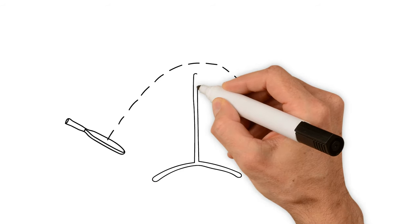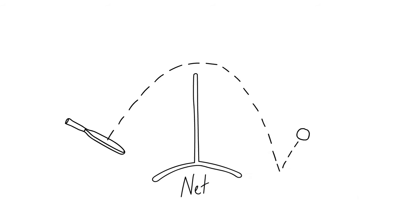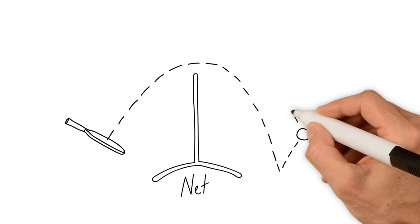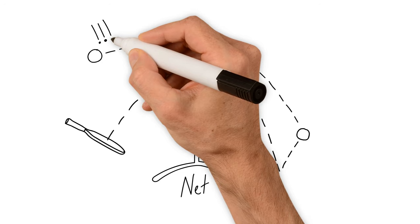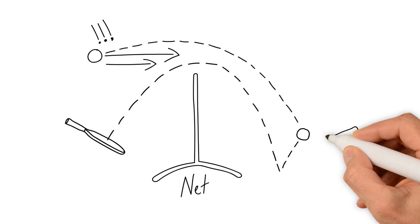During this part of the game, all players engage in a series of dinks across the net. The goal is to keep the ball as low as possible. If the ball goes too high, it gives the opposing team the advantage of slamming the ball right back at you.